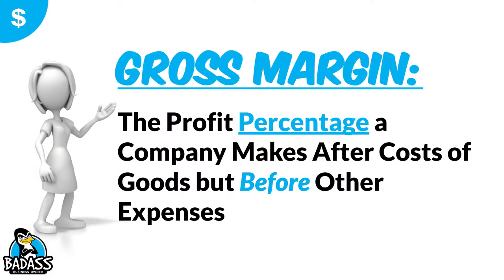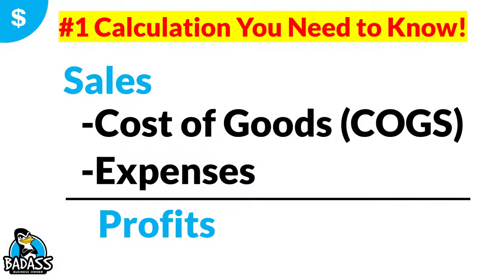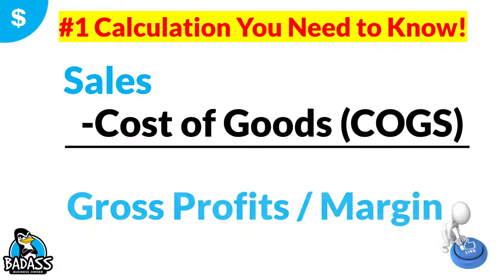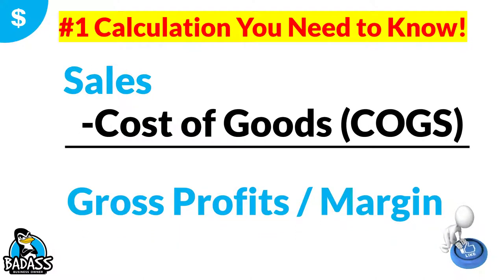Great question. The gross margin is using it as a percentage — it's the profit percentage a company makes after the cost of goods but before the other expenses. It's still based off of sales and cost of goods, but it's expressed as a percentage versus a dollar amount. After sales minus your cost of goods, it's going to be either your profit or your margin, depending upon how you're looking at it.